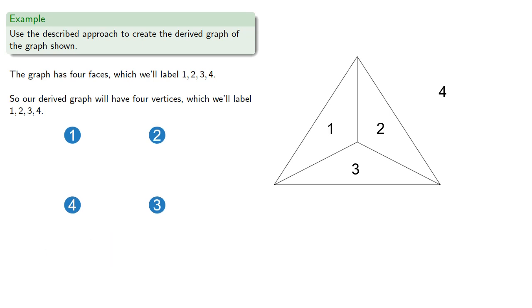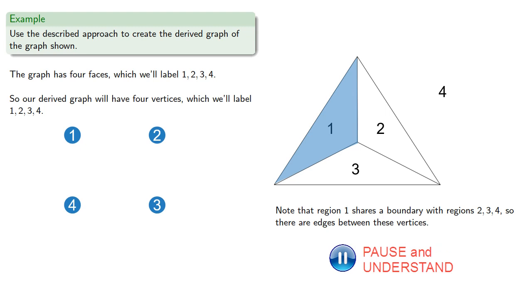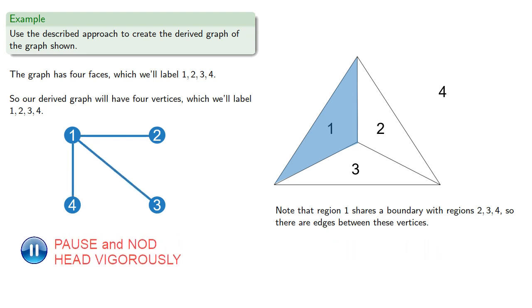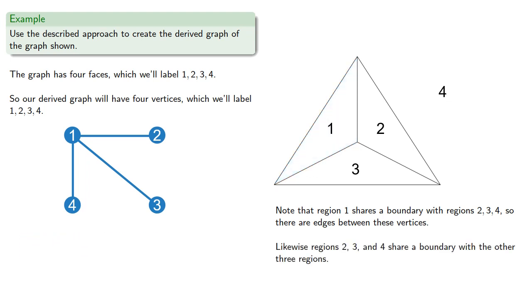So let's join vertices that share a common edge. So region 1 shares a boundary with regions 2, 3, and 4, so there are edges between these vertices, 1, 2, and 3, and 4. Likewise, regions 2, 3, and 4 share a boundary with the other three regions, so we'll include edges between them.